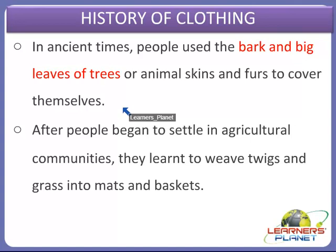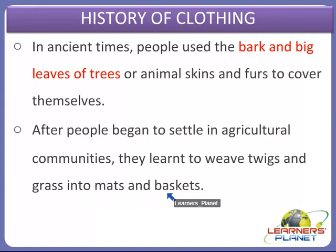Have you ever wondered what materials people used in ancient times for cloths? It appears that in those times they used the bark and big leaves of trees. After people began to settle in agricultural communities, they learnt to weave twigs and grass into mats and baskets and even clothes for themselves. Vines, animal fleece, or hair were twisted together into long strands, and these were then woven into fabrics. The early Indians wore fabrics made out of cotton that grew in regions near the river Ganga. Even flax was also a plant that gives natural fibers.